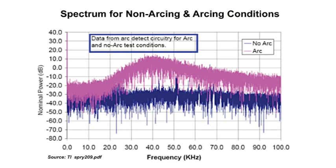Arc fault detection works by analysis of the current frequency spectrum. Normal noise patterns are similar to the fault waveforms, making reliable detection a challenging design task. Cases have been reported of false trips where no fault condition existed. The solution was a firmware upgrade from the inverter manufacturer.